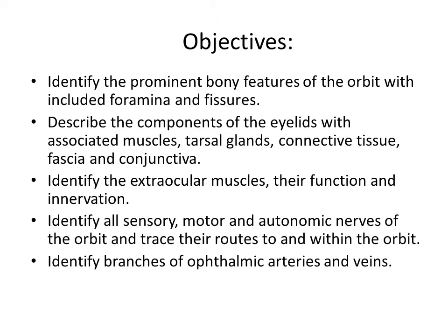Some of our objectives for today are to identify all of the prominent bony features. This includes all the foramina and fissures, because this is where we have the important structures passing through. Then we are also going to describe all the components that make up the eyelids — so that includes the associated muscles, tarsal glands also called meibomian glands, all the connective tissue, fascia, and conjunctiva. We are going to identify all of the extraocular muscles.